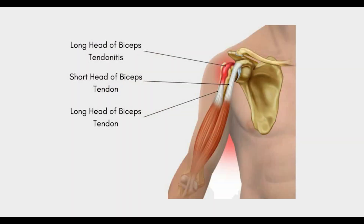This video is about biceps tendinitis and the treatment of biceps tendinitis, to include either a biceps tenotomy or a biceps tenodesis. One of the most common causes of shoulder pain that I see in my office is biceps tendinitis. This can happen in patients at any age. Typically a patient is going to describe anterior shoulder pain — pain in the front of the shoulder — that typically bothers them with motion but can also be bothersome while at rest.